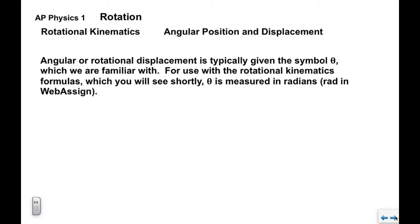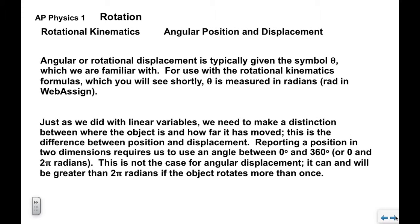Angular or rotational displacement is typically given the symbol theta (θ). For use with rotational kinematics formulas, we want theta measured in radians. In WebAssign, use 'rad' for units. Just as with linear variables, we need to distinguish between where the object is (position, between 0 and 2π radians) and how far it has moved (displacement), which can and will be greater than 2π radians if the object rotates more than once.